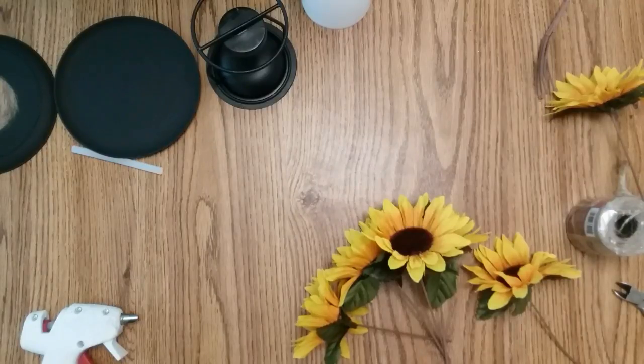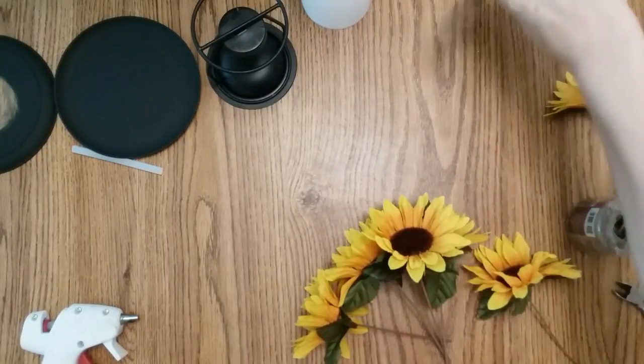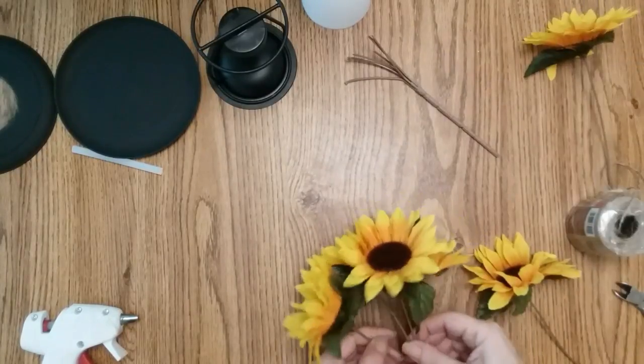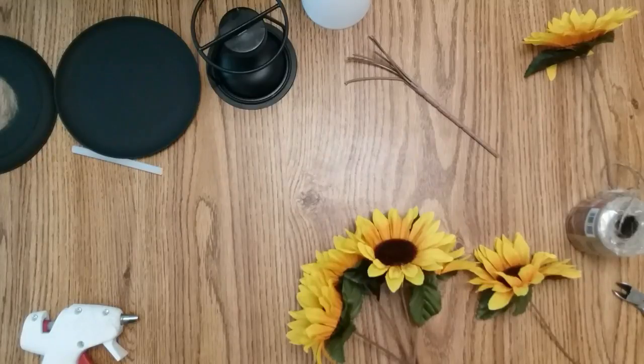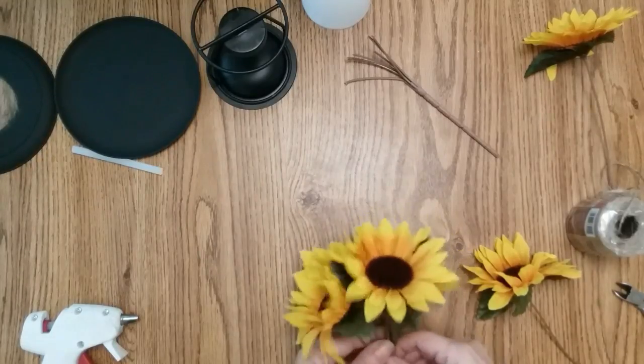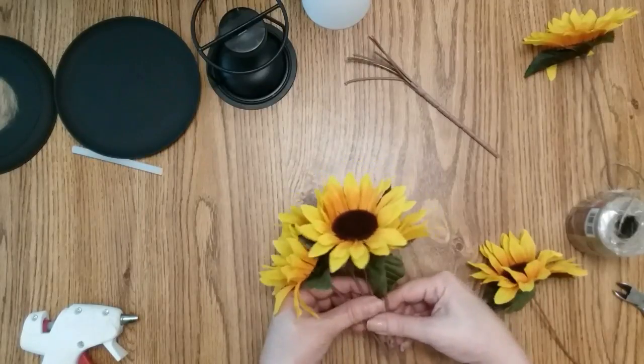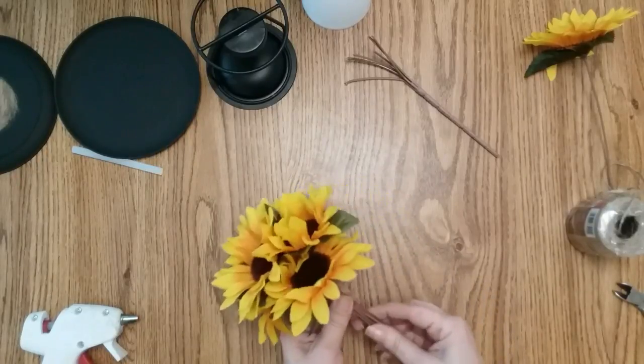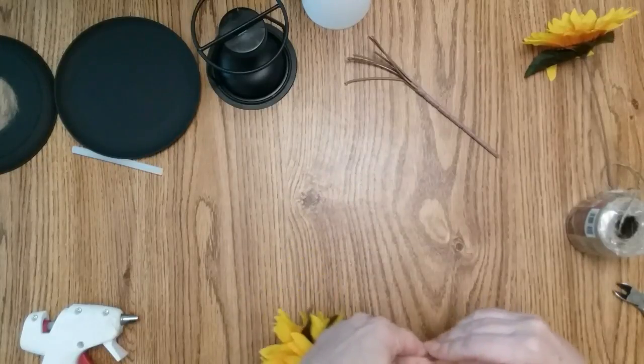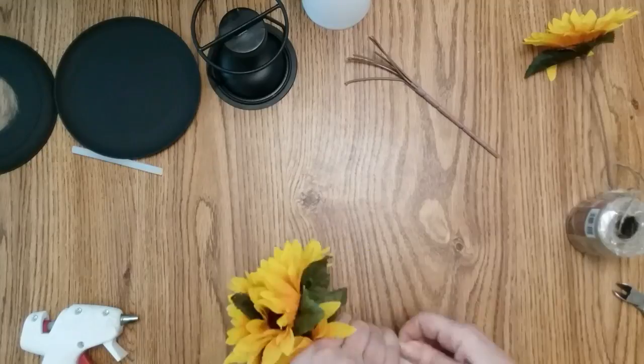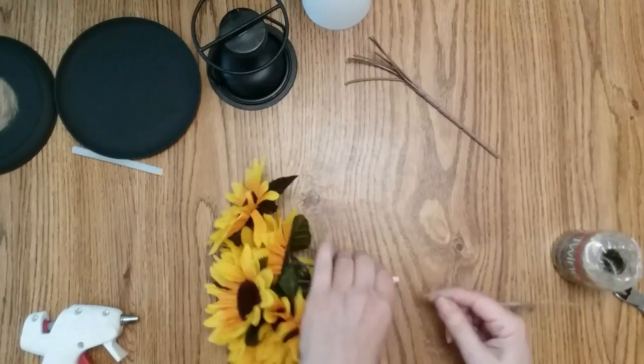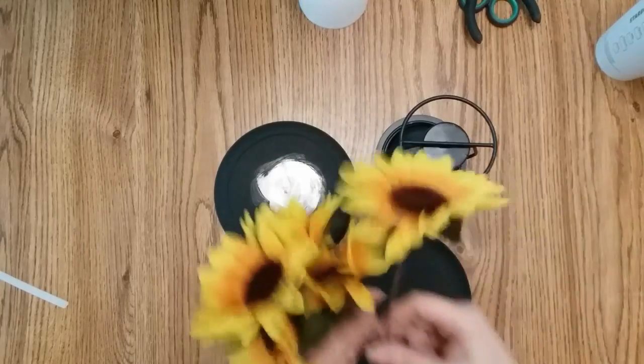While I'm waiting for my hot glue gun to get heated up, I am going to take care of my flowers. So I trimmed all my flowers down to like five inches and one at six. I'm going to grab a piece of duct tape, place them just one on top of the other, and then take my duct tape and wrap it around. I'm going to take my jute and just cover up my duct tape. Now my flowers are done.